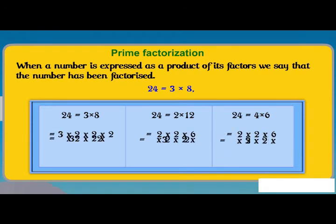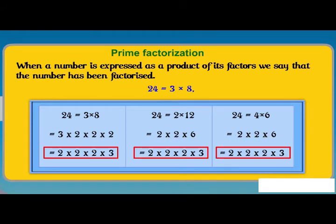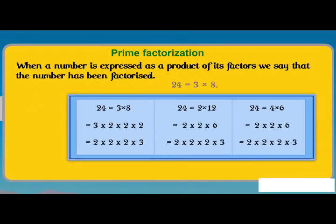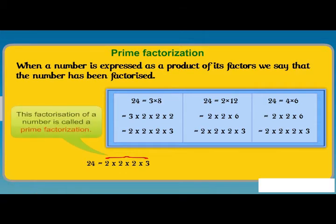When we further factorize them, we ultimately arrive at only one factorization, 2 into 2 into 2 into 3. In this factorization, the only factors 2 and 3 are prime numbers. This factorization of a number is called a prime factorization.